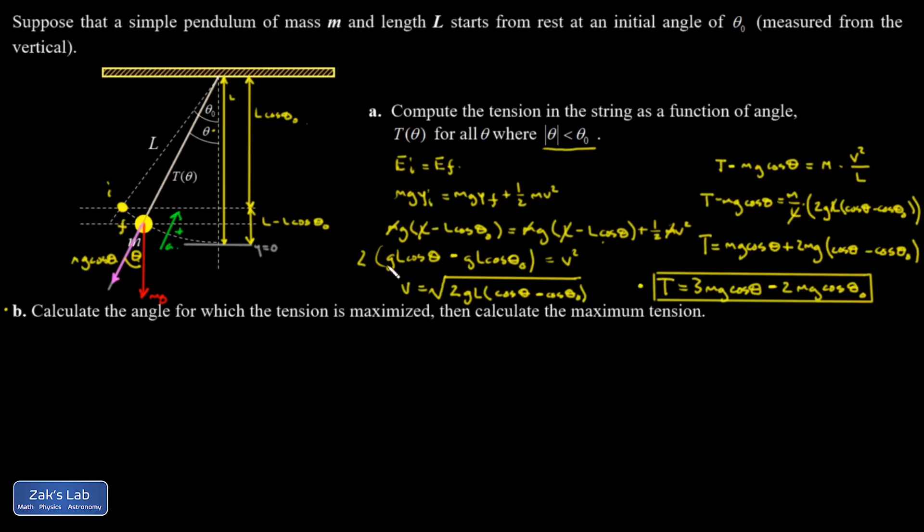Then we want to find the maximum tension. What we got from part a is T as a function of theta. How do you find the maximum value of this symbolically? You take the derivative and set it equal to zero. The derivative of the theta naught containing term, that's zero. Theta naught is just a constant there. Of course, m and g aren't functions of theta either. The only thing that's a function of theta is the first term. When I differentiate the cosine, I get a minus sign. So I'm going to put the minus out in front: minus 3mg sine theta.